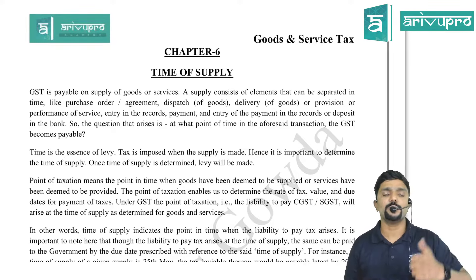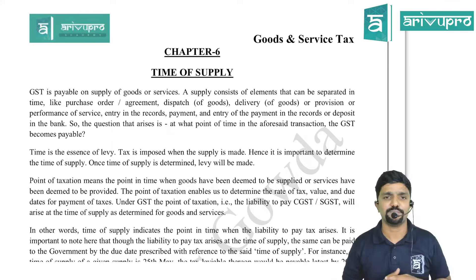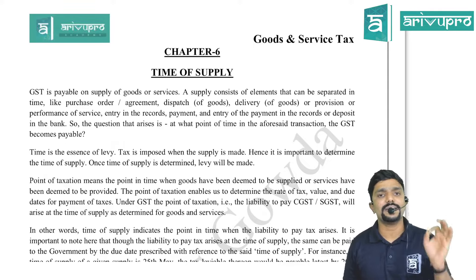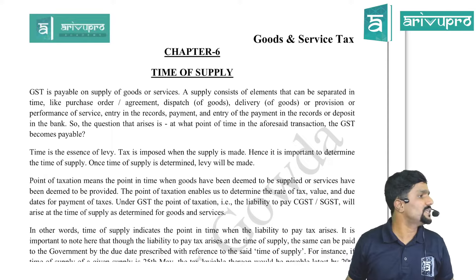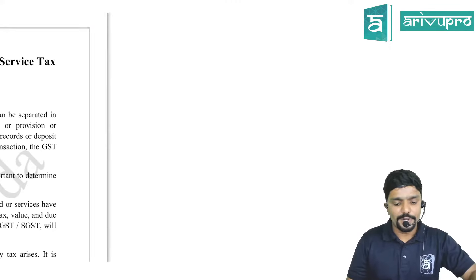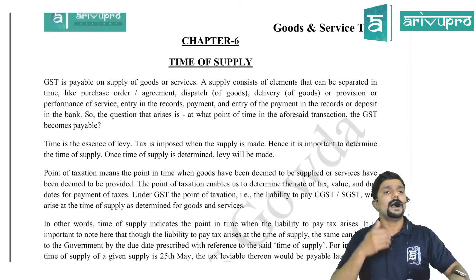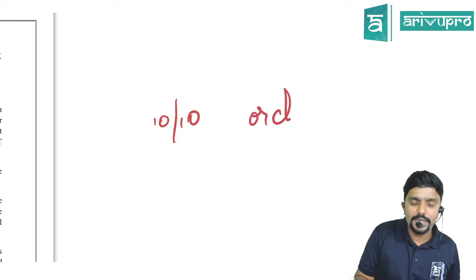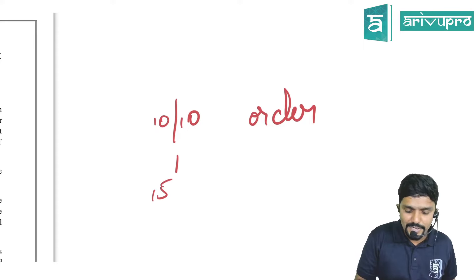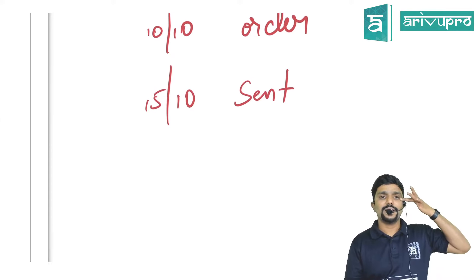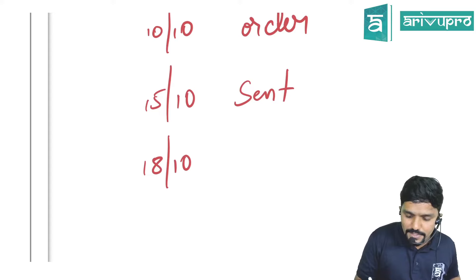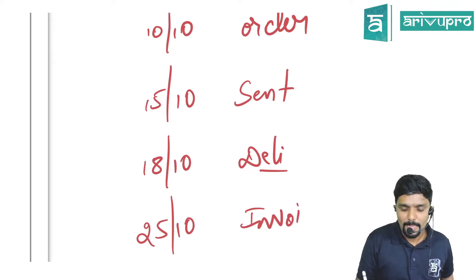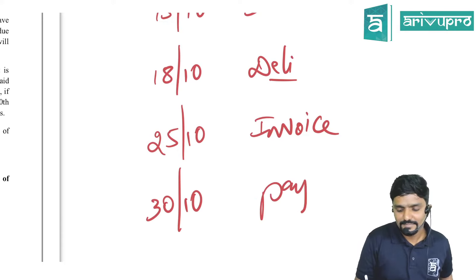We have decided who should pay tax and what they should pay — CGST plus SGST or IGST. Now we need to decide when they should pay, and that is what Time of Supply will tell us. Time of Supply tells when supply is deemed to be provided — that is when it is completed. For example, various events happen for a single transaction: placing an order on 10th October, goods sent on 15th October, delivered on 18th October, invoice issued on 25th October, payment made on 30th October.